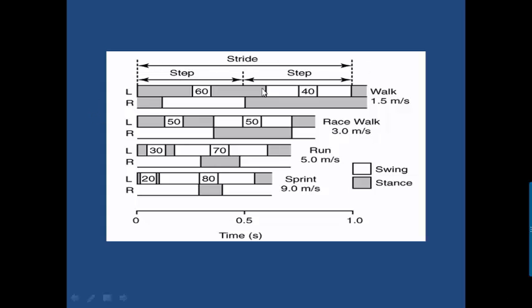...is equal to two steps. Here's the step for walking, speed race walking, running, sprinting. The white is swing phase and the dark is stance phase. So basically one stride is from left heel contact to the following left heel contact. One step is from left heel contact to right heel contact. The next step is right heel contact to left heel contact, so two steps make a stride.